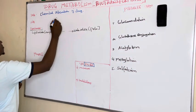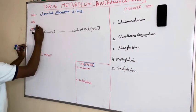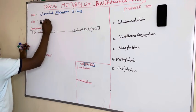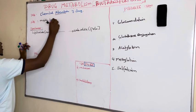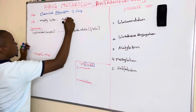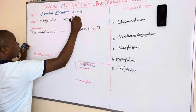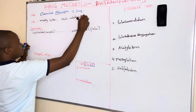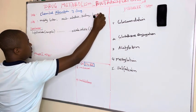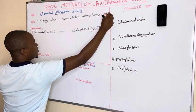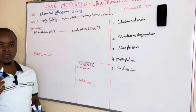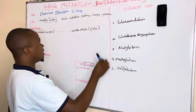After being chemically altered, this biotransformation occurs majorly in the liver. The minor sites include the intestines, the kidneys, the lungs, and sometimes the plasma, but the major site remains the liver as the primary site of biotransformation.